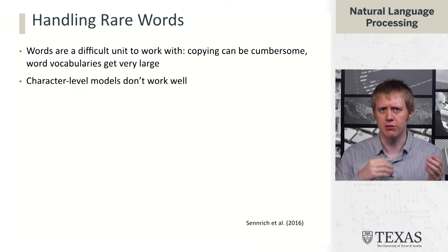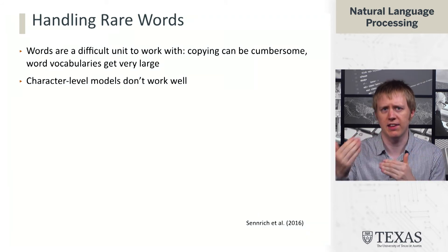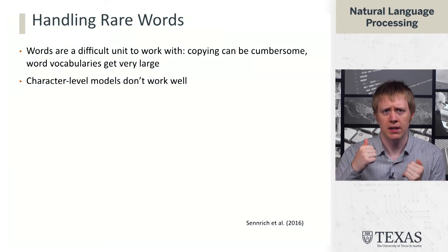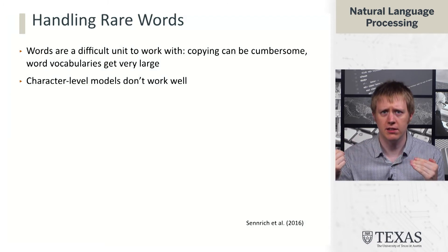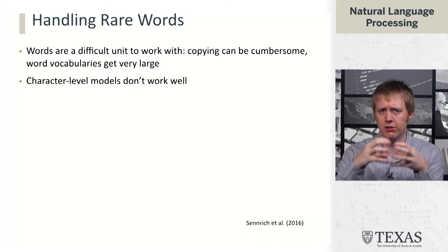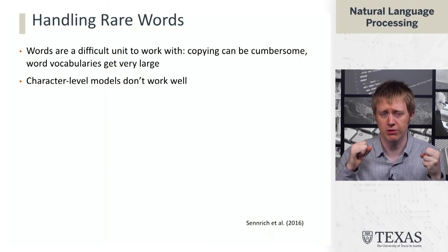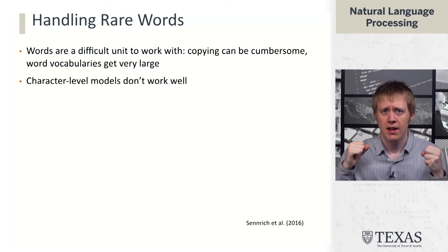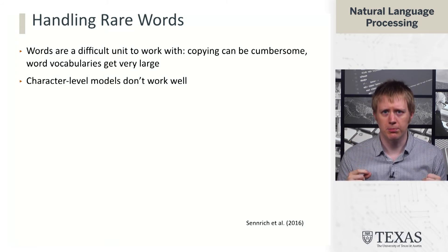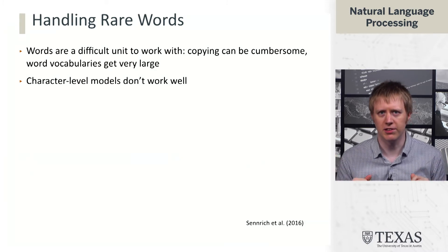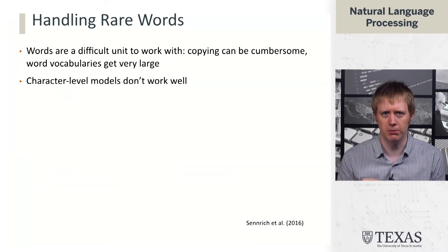If the vocabulary is too small, you need to do a lot of copying and that's hard to implement. And if it's too large, things get really slow because you always have this softmax where you're placing distributions over the whole set of words. One solution that people explored briefly — this was big in about 2016, 2017 — was character-level modeling.